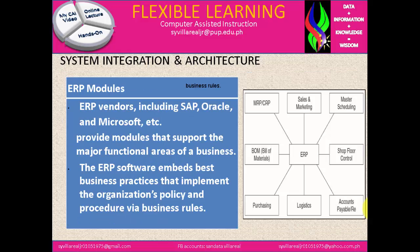In ERP modules, as shown in the figure, ERP vendors including SAP, Oracle, and Microsoft provide modules that support the major functional areas of the business. The ERP software embeds best business practices that implement the organization's policy and procedure by a business rule. Under the figure, we have ERP at the center, with programs and working committees for functions such as logistics, accounting, payable, staff, floor control, and master scheduling — all incorporated in ERP.